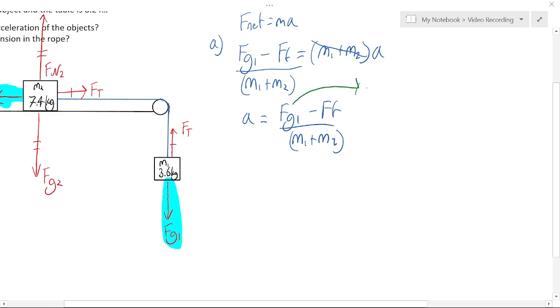we know Fg1 is, well Fg equals m times g, mass times 9.8. And we know m1 is 3.6. So this is equal to m1 times g,